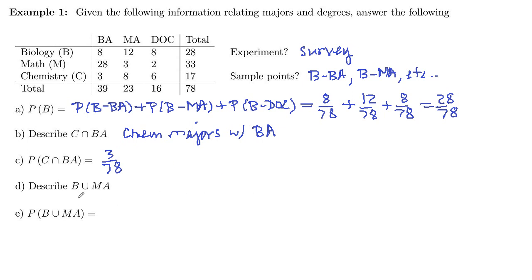Describe B union MA. So union is OR. B are the biology majors, and the master's degrees are these people here. So we connect those up with an OR. This is going to be bio majors or those with master's degrees.